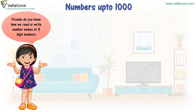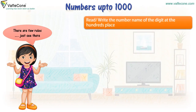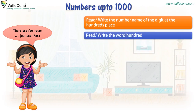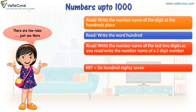Friends, do you know how we read or write number names of three-digit numbers? See, there are a few rules. Just see there. First, read or write the number name of the digit at the hundreds place. Then, read or write the word 'hundred.' Finally, read or write the number name of the last two digits as you read or write a two-digit number. For example, 687 is six hundred eighty-seven.